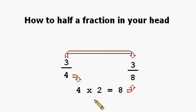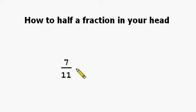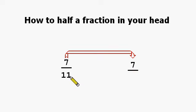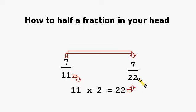Let's try a different fraction. This time let's go with seven-elevenths. Let's copy the seven over. We take the eleven, multiply it by two, we get twenty-two. We place the twenty-two underneath here. So now we have seven-twenty-seconds. This is half of seven-elevenths.